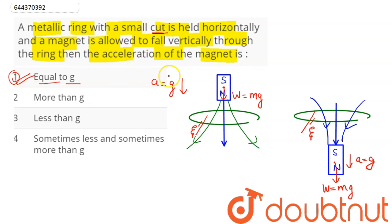When this small cut is made, no current shall flow and there will be no attractive or repulsive force on the magnet. In that case when a magnet is allowed to fall vertically through the ring, acceleration of the magnet is equal to g. That is option number one is the correct answer.